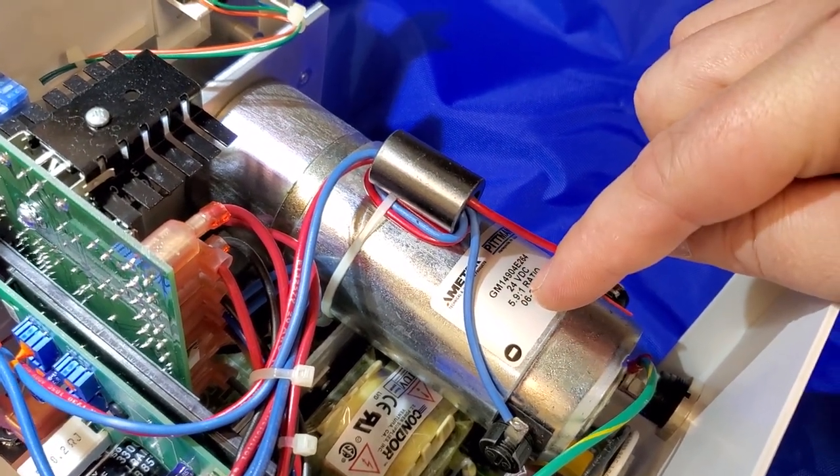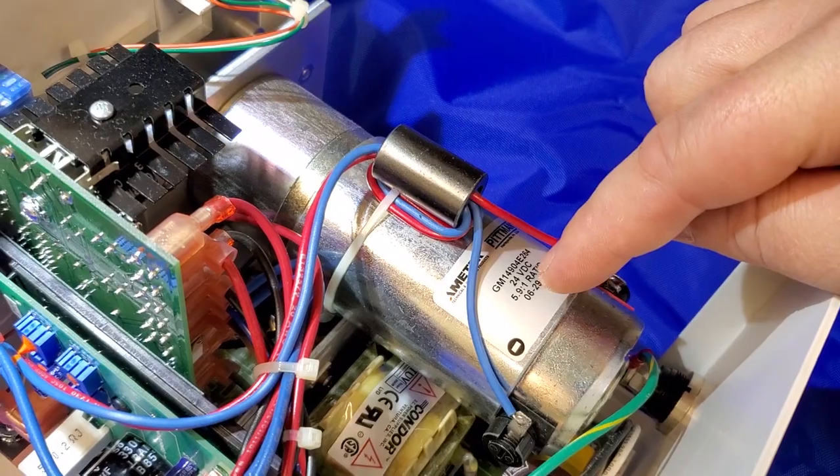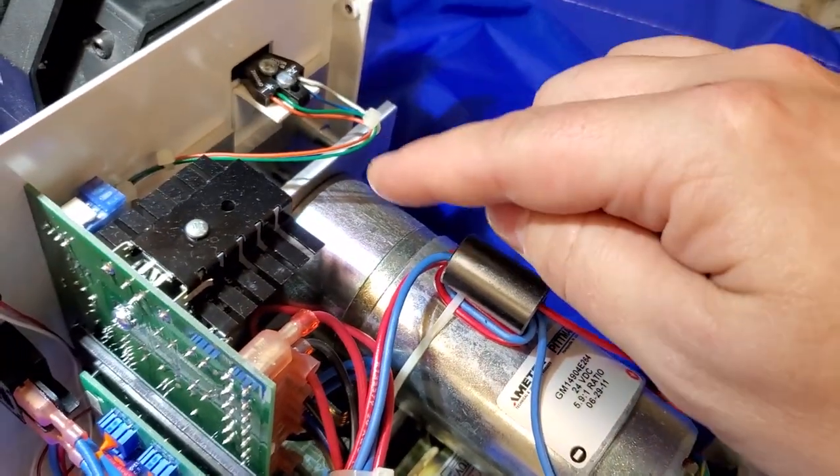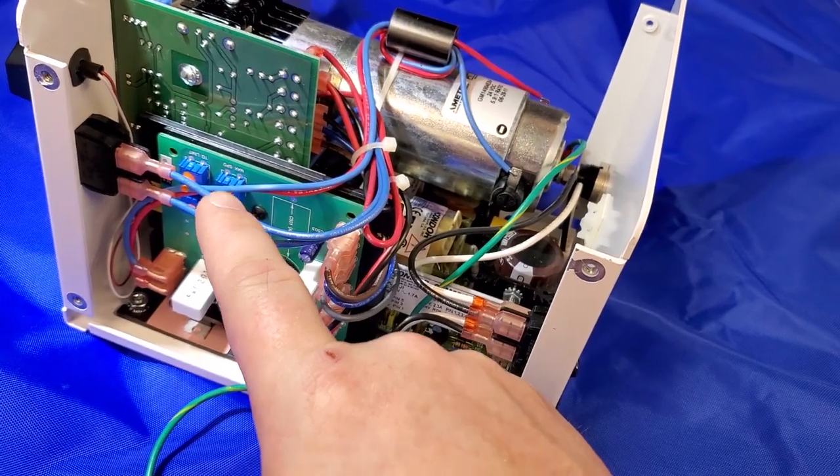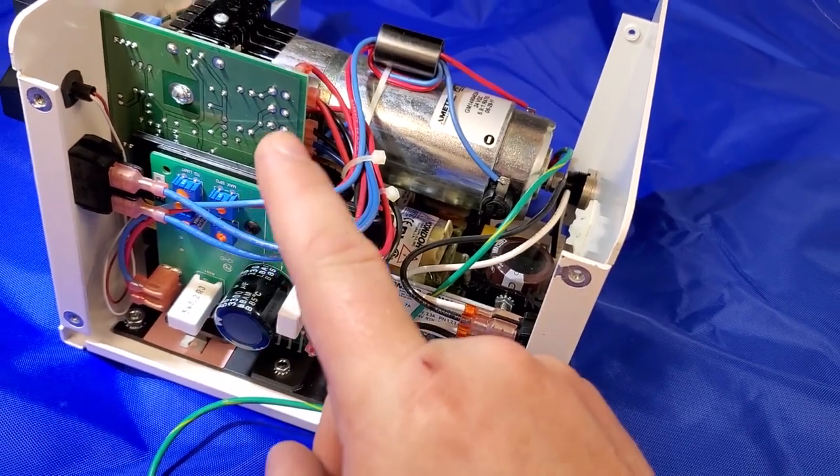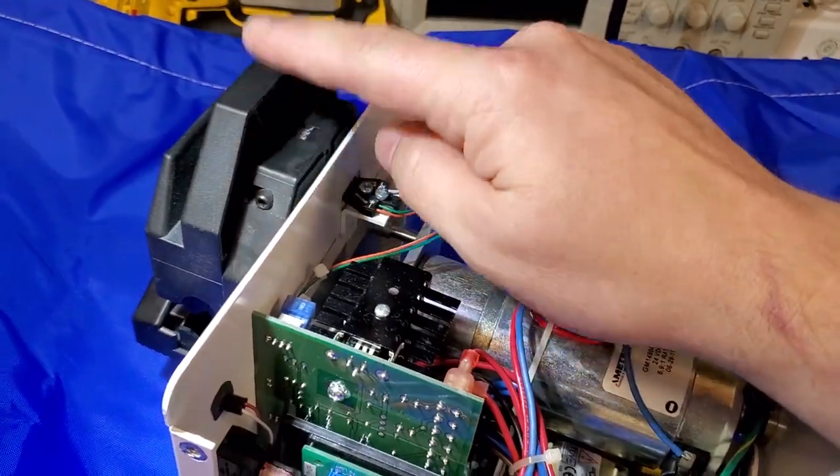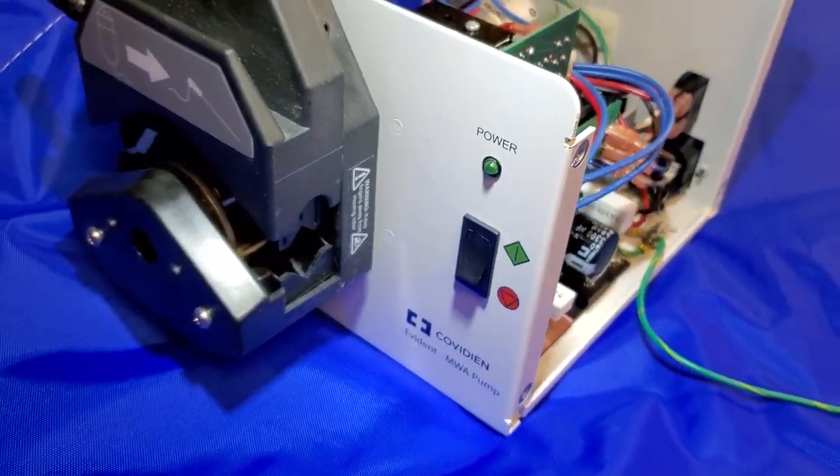You can see it right here. It's a 5.9 to 1 ratio. So that's already a pretty steep reduction, but they can also slow it even further by using pulse width modulation. And that's how they can control your calibration of your output on this peristaltic pump.